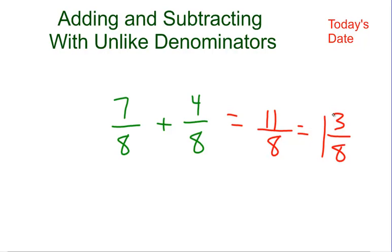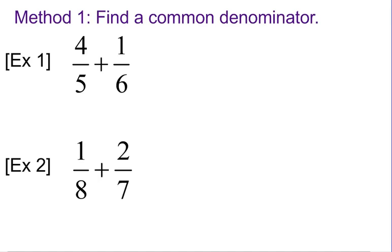So what happens when we have denominators that are different? Here we have 4 fifths plus 1 sixth.